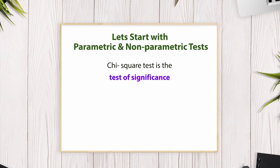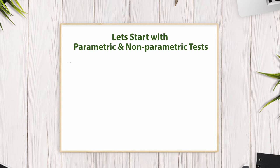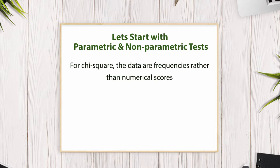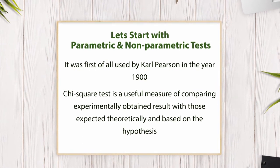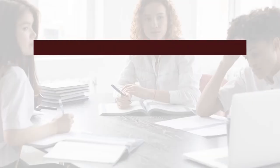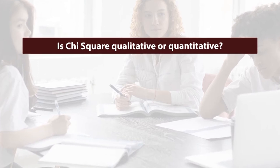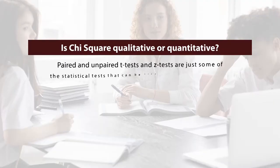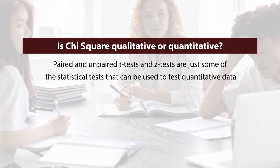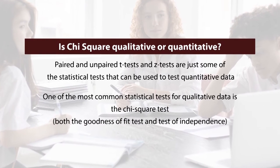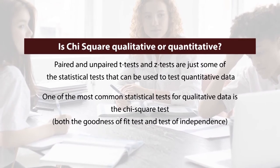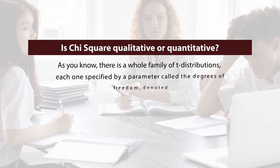Chi-square test is a test of significance, first used by Karl Pearson in the year 1900. It is a useful measure of comparing experimentally obtained results with those expected theoretically based on a hypothesis. Is Chi-square qualitative or quantitative? The T-test and Z-test are used for quantitative data, whereas one of the most common statistical tests for qualitative data is the Chi-square test — both the goodness of fit test and the test of independence.